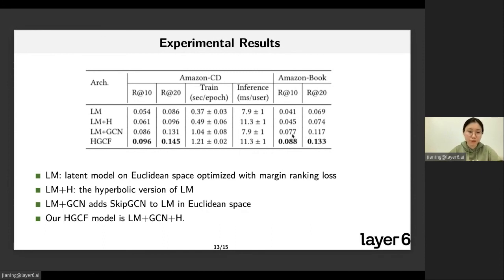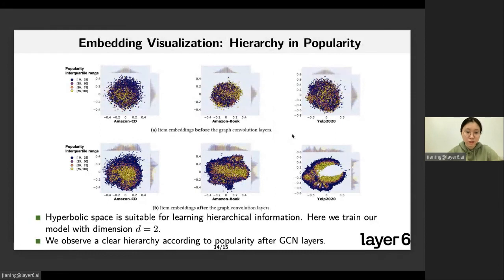We also use some visualization on our learned embeddings. Here we visualize our learned item embeddings before and after going through the skip GCN layers. We see that before the GCN layers, the item embeddings with different popularities are sort of mixed together. After GCN layers, we observe a clear popularity hierarchy where higher popularity items, shown with the color yellow, are more centralized and less popular items are placed at lower levels of the curvature.